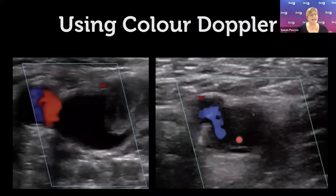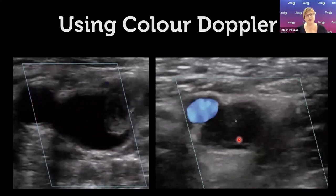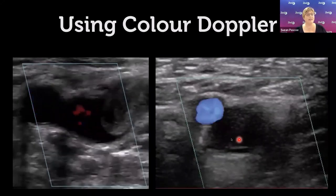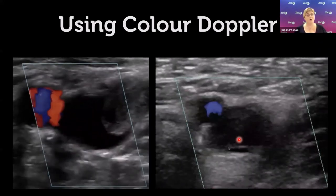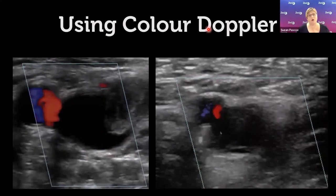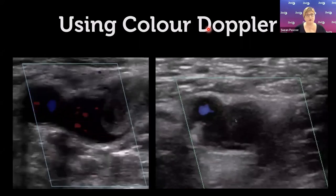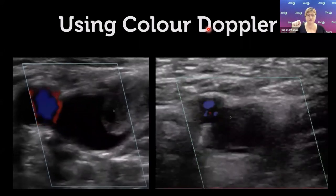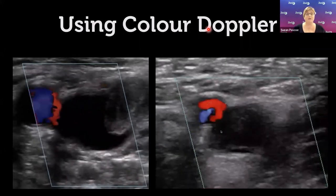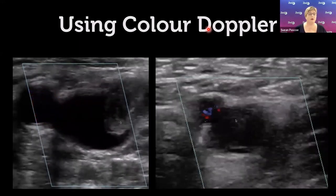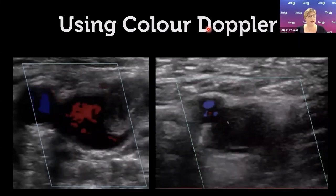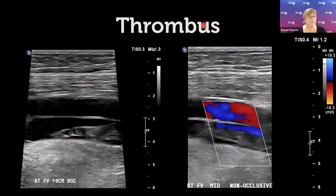Colour Doppler can assist: if thrombus is present, you won't get a Doppler signal because blood is still — you'll see either a 'bite taken out' where flow should be or a complete absence of flow. Arteries are pulsatile; veins are not. Getting the patient to squeeze their toes can force blood upward to augment the venous signal, but be very hesitant to do this if a clot is suspected, to avoid dislodging a thrombus. A longitudinal colour Doppler image can show partial obstruction with some flow visible, indicating non-occlusive clot.